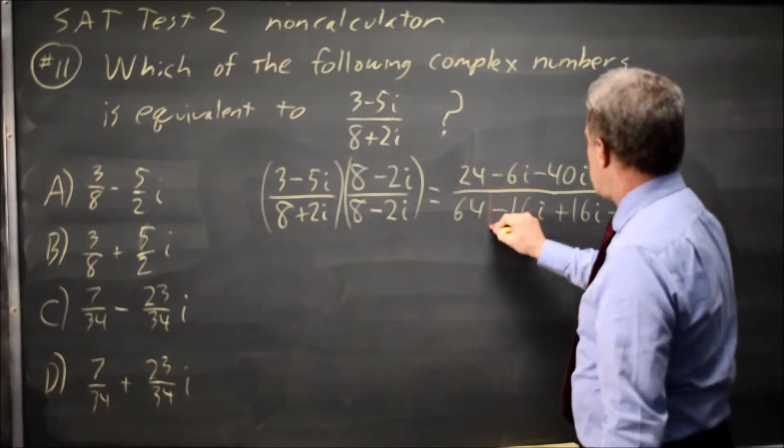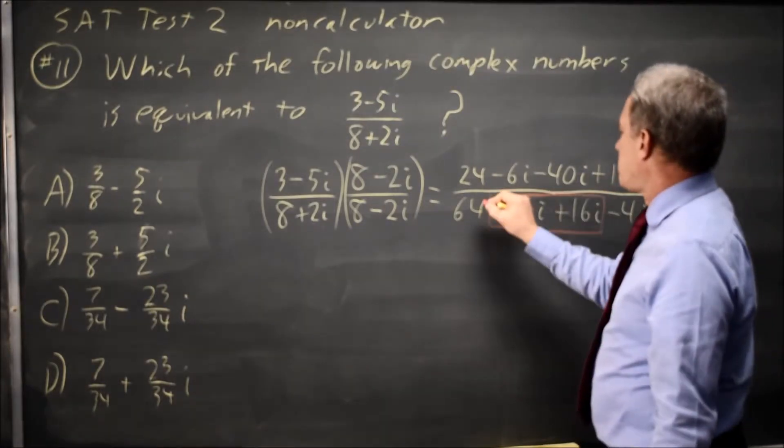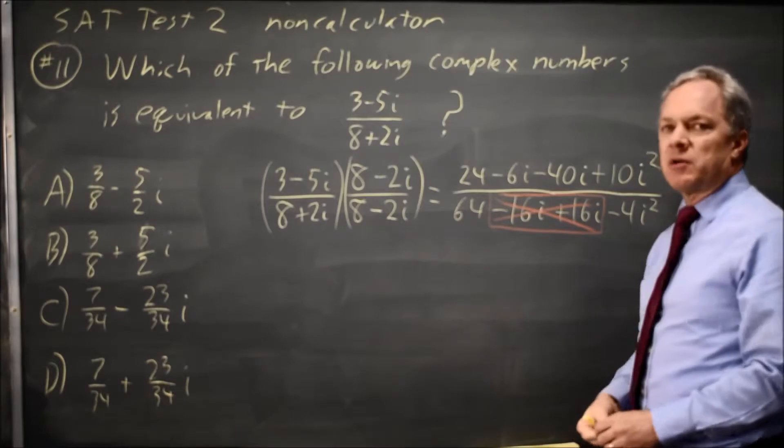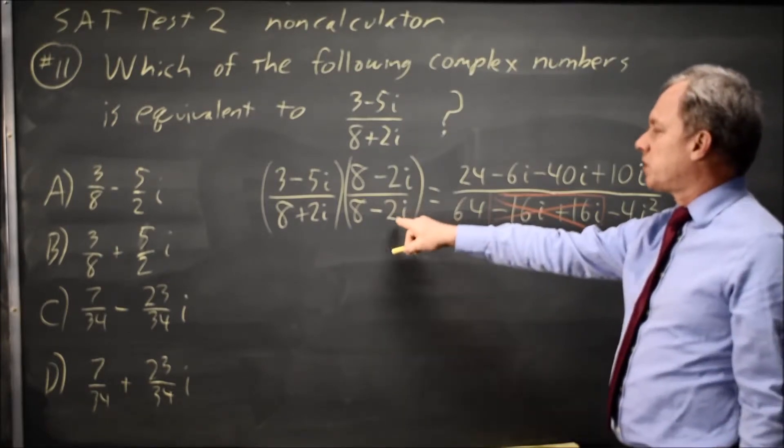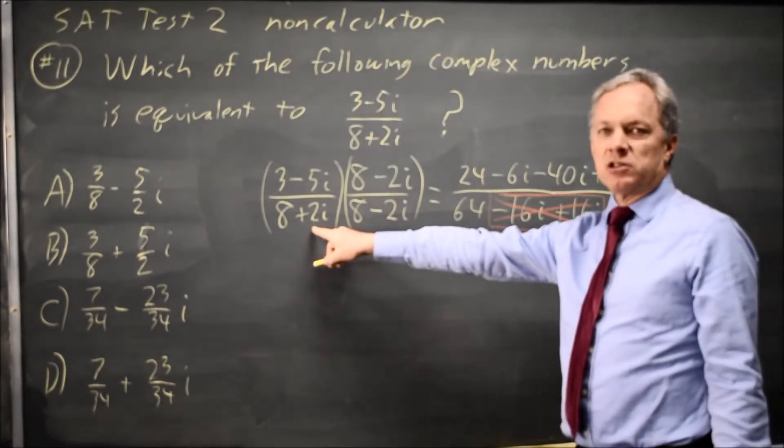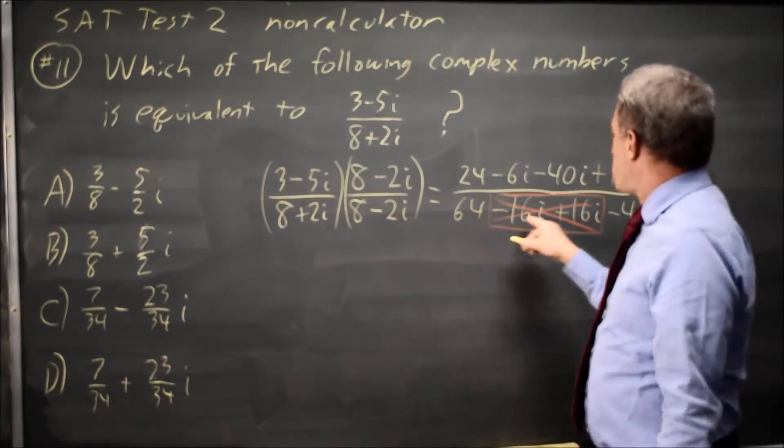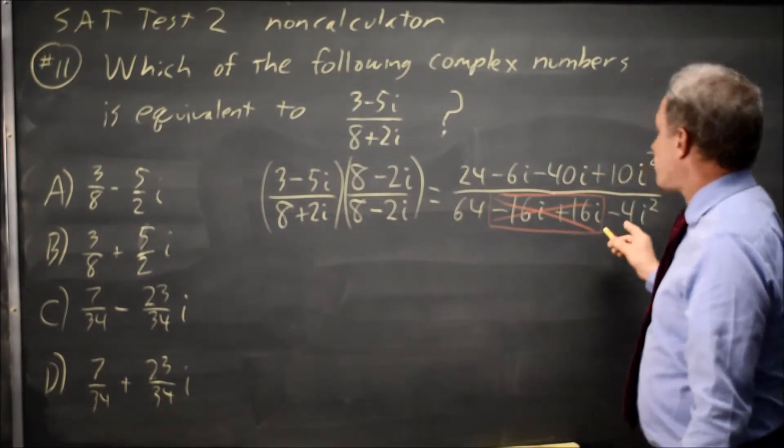But first, the negative 16i plus 16i in the denominator, that's zero. And that's why we multiply by the conjugate of the denominator. When you multiply two complex conjugate numbers, you end up with a pure real number once we simplify that i squared.